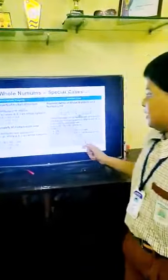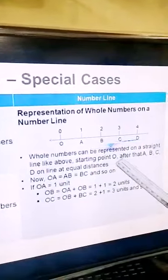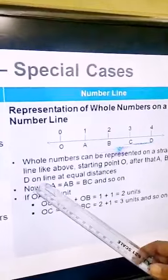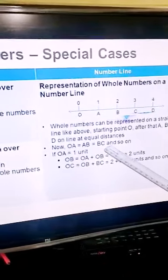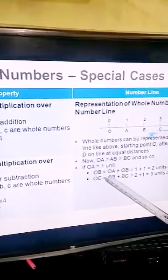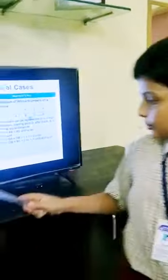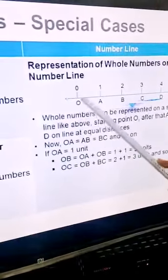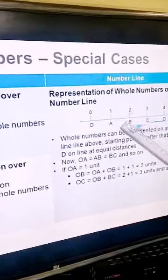Now we can use the number line. Whole numbers can be represented on a number line starting at point O, then A, B, C, D at equal distances. If OA equals one unit, then OB = OA + AB = one plus one = two units. OC = OB + BC = two plus one = three units, and so on. This is the end of the whole numbers and natural numbers session.